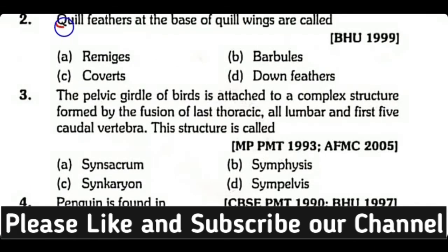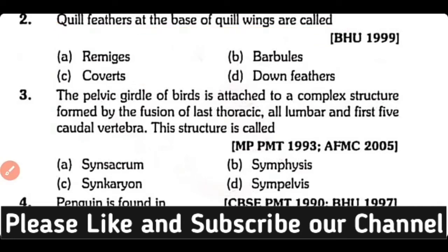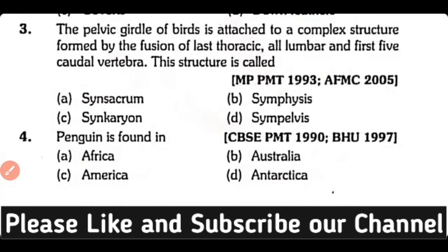Question 2. Quill feathers at the base of bird wings are called: Remiges, Barbules, Coverts, Down feathers. Correct answer is option C. Quill feathers at the base of wings are called coverts.